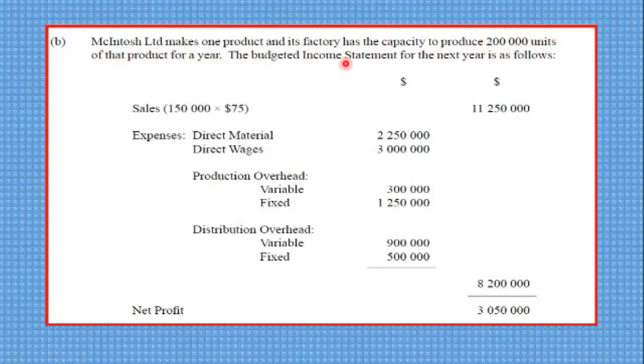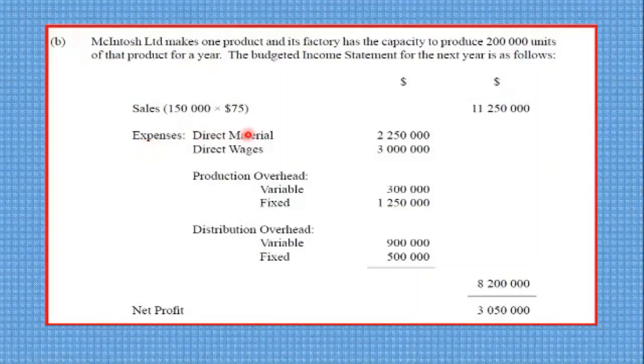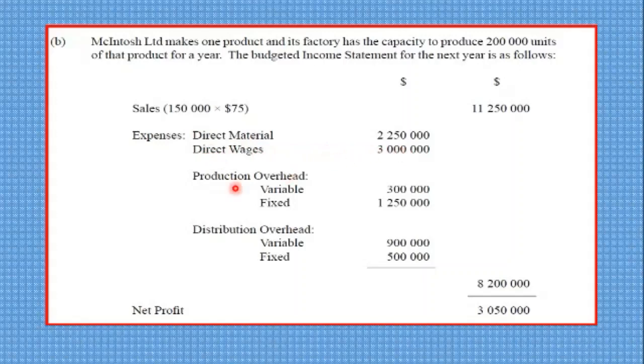The budgeted income statement for the next year is as follows. Sales: we have 150,000 units by $75 equal $11,250,000. Then we are given the expenses. Direct materials, $2,250,000. Direct wages, $3,000,000. Production overhead, the variable portion is $300,000 and fixed $1,250,000. And the distribution overhead is $900,000 variable, fixed $500,000. Okay. So we have the production cost up here and the other admin and selling distribution and so on down here.